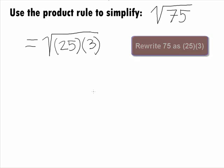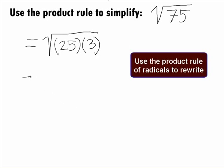Since we have a product, we can apply the Product Rule of Radicals and rewrite this as the square root of 25 times the square root of 3.